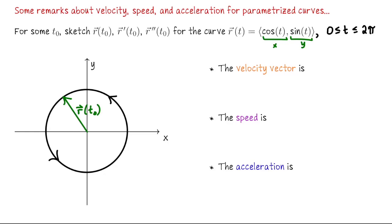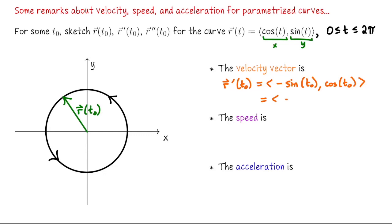The velocity vector at that point is obtained by evaluating r prime of t-naught. We differentiate component by component: the derivative of cosine is negative sine, so r prime of t-naught equals negative sine of t-naught, cosine of t-naught. Since the sine of the input is the y-value and the cosine is the x-value, we can also write this as negative y, x.